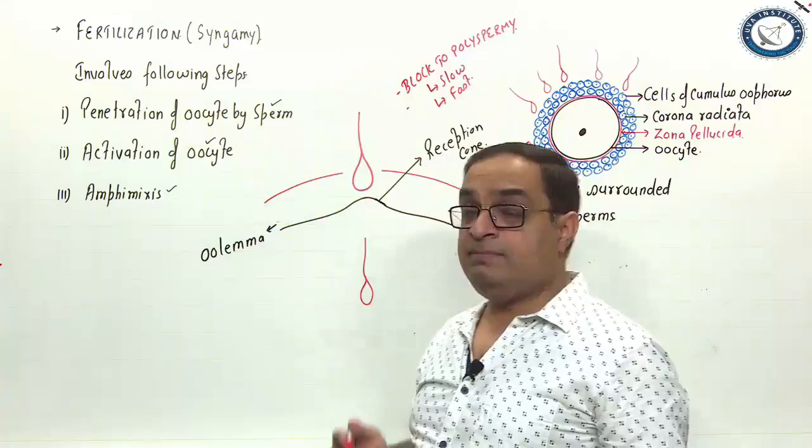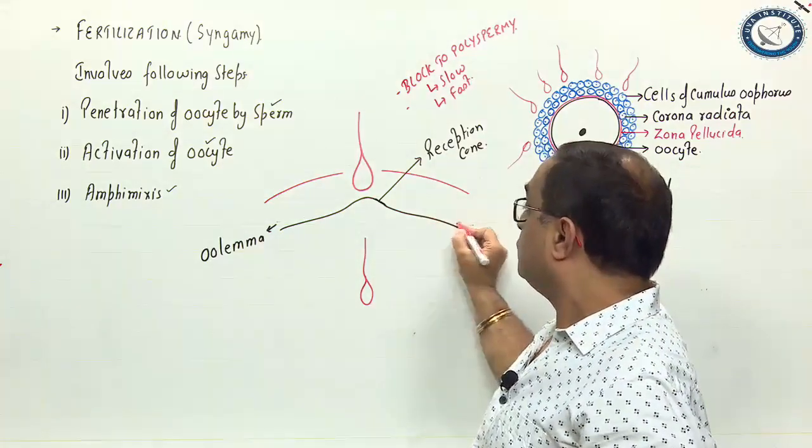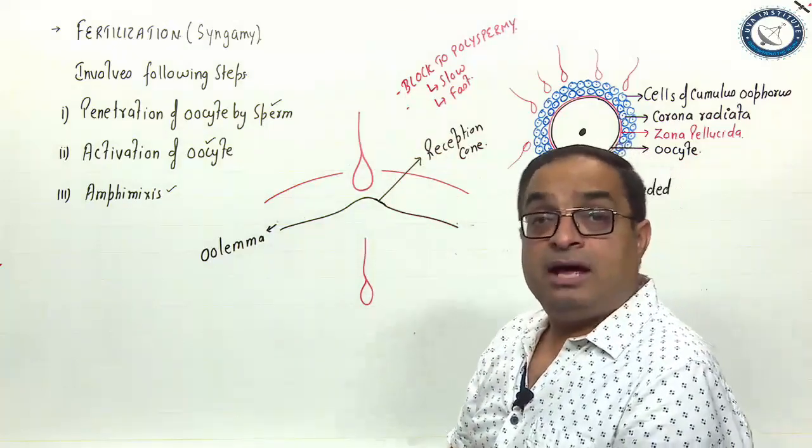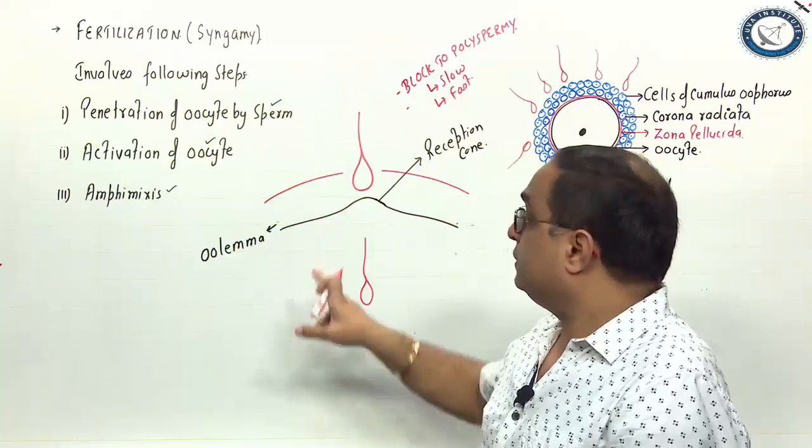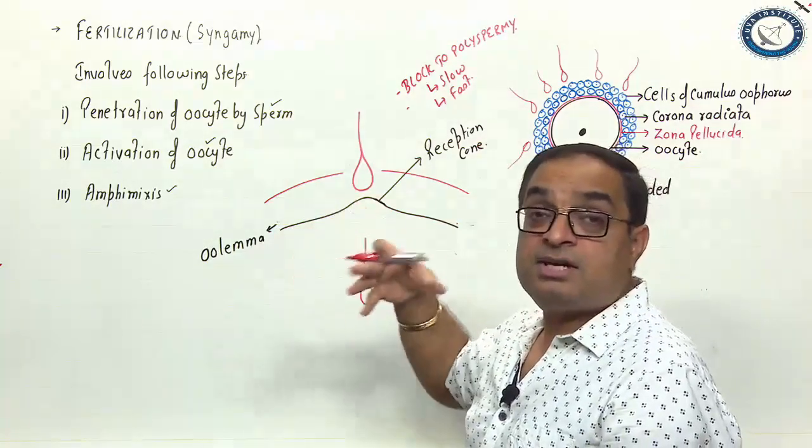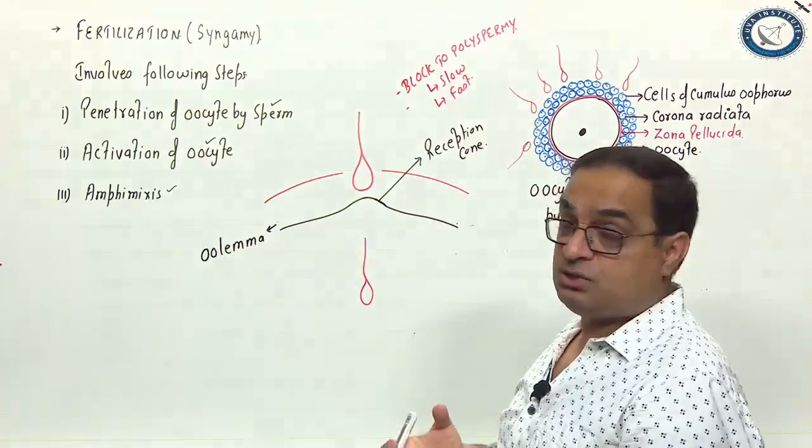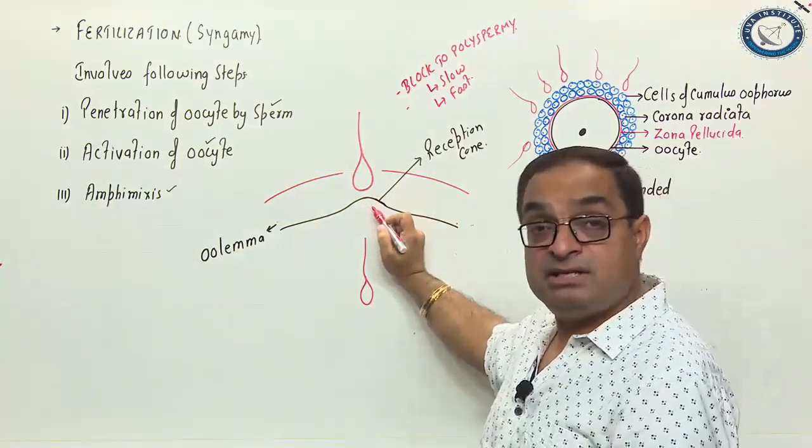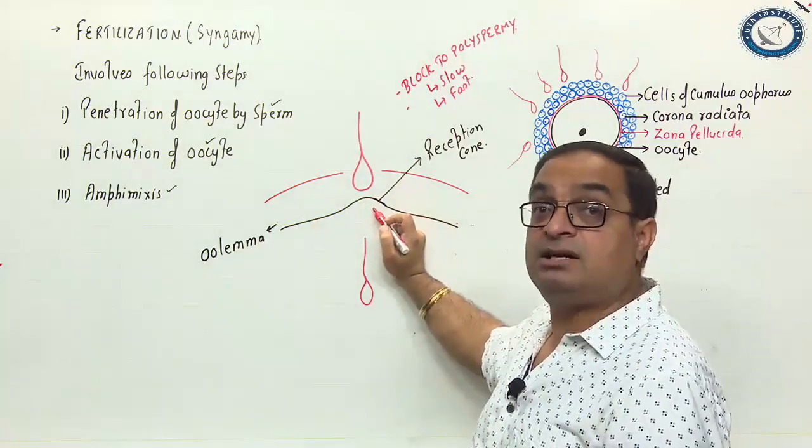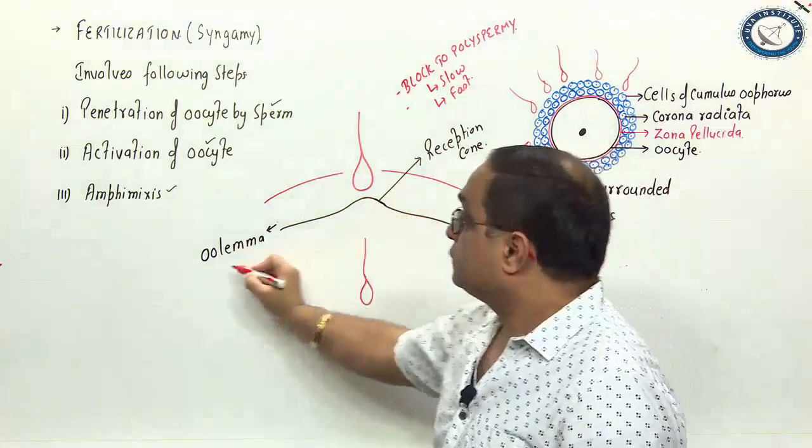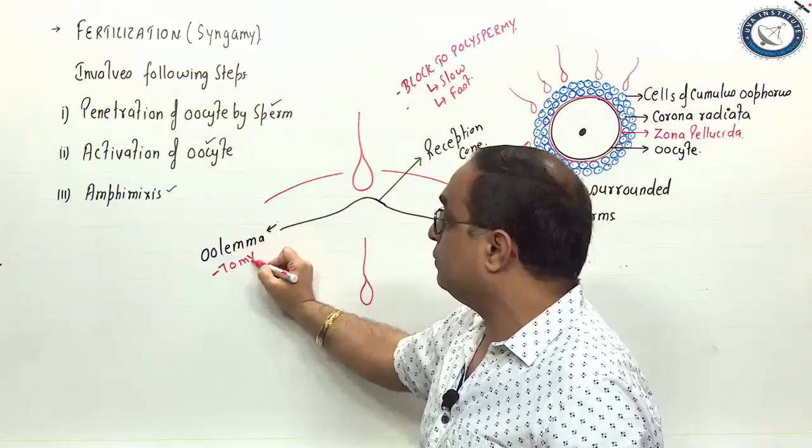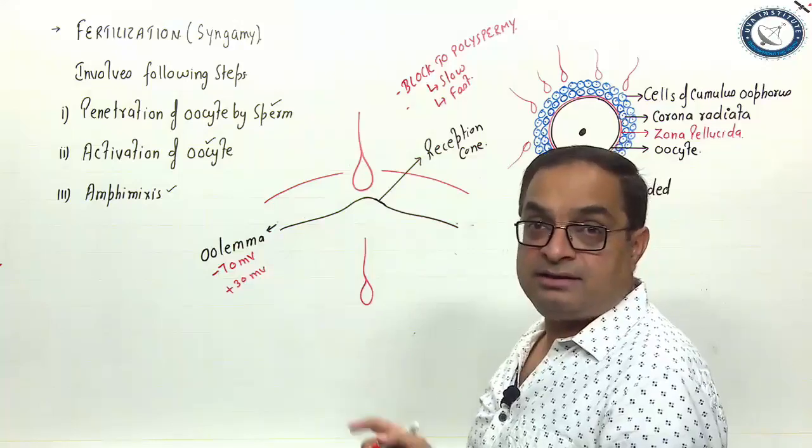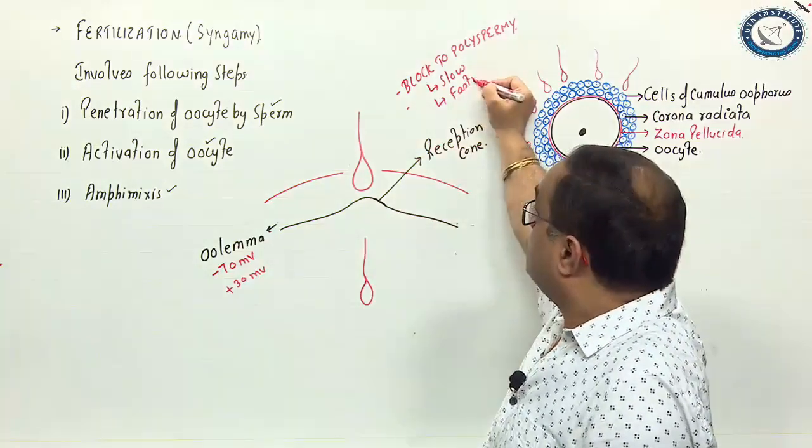It involves slow block to the polyspermy and fast block to the polyspermy. The fast block to the polyspermy is due to change in membrane potential of the oolemma. The moment a sperm establishes a connection and enters into the oocyte, the polarity, the plasma membrane of the oocyte that is oolemma, there occurs a change in the polarity. There is depolarization. It is brought about by change in membrane potential of oolemma from minus 70 millivolts before sperm entry to plus 30 millivolts after the sperm entry. Before the sperm entry, the potential is minus 70 millivolts. After the sperm entry, it becomes plus 30 millivolts and new sperms cannot enter at this changed potential. That is fast block to polyspermy.